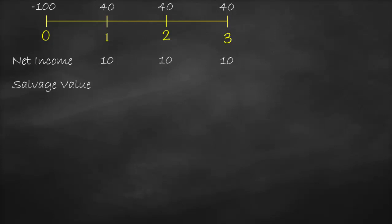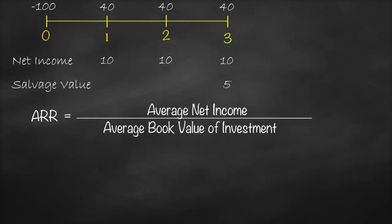We need to calculate another capital budgeting tool called Accounting Rate of Return. Our ARR will use net income instead of free cash flow. Remember, net income is not as accurate as free cash flow. Therefore, ARR equals average net income divided by average book value of investment.